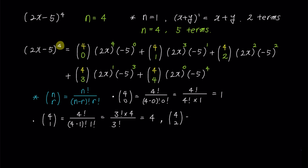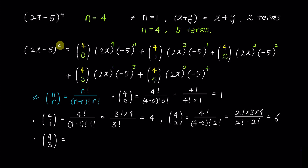4C2 is equal to 4 factorial over (4 minus 2) factorial times 2 factorial. If we express the numerator 4 factorial as 2 factorial times 3 times 4, the 2 factorial cancels out resulting in the value of 6. 4C3 is equal to 4 factorial over (4 minus 3) factorial times 3 factorial, which is the same as 4C1, so it also has the value of 4. Due to the symmetry of Pascal's triangle, 4C4 also has the same value as 4C0, which is 1.